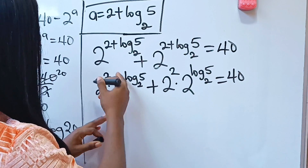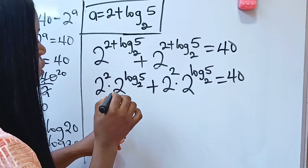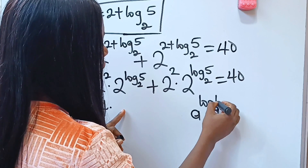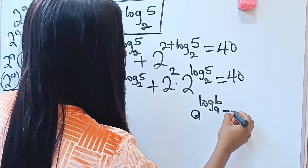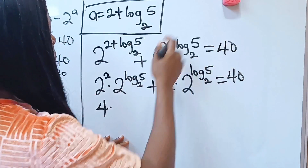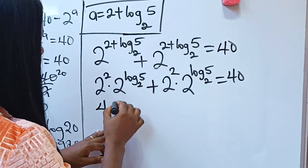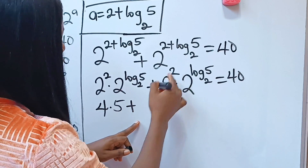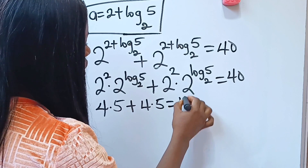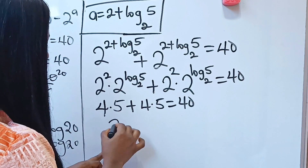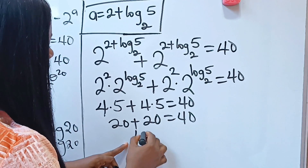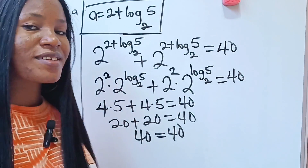Now 2 to the power of 2 is 4. And where you have a raised to the power of log base a of b, this is equal to b. That means 2 to the power of log base 2 of 5 is equal to 5. So we have 4 multiplied by 5, plus 4 multiplied by 5, equal to 40. Now 4 times 5 is 20, and 4 times 5 is 20, and 20 plus 20 equals 40. So we have that 40 is equal to 40. Amazing!